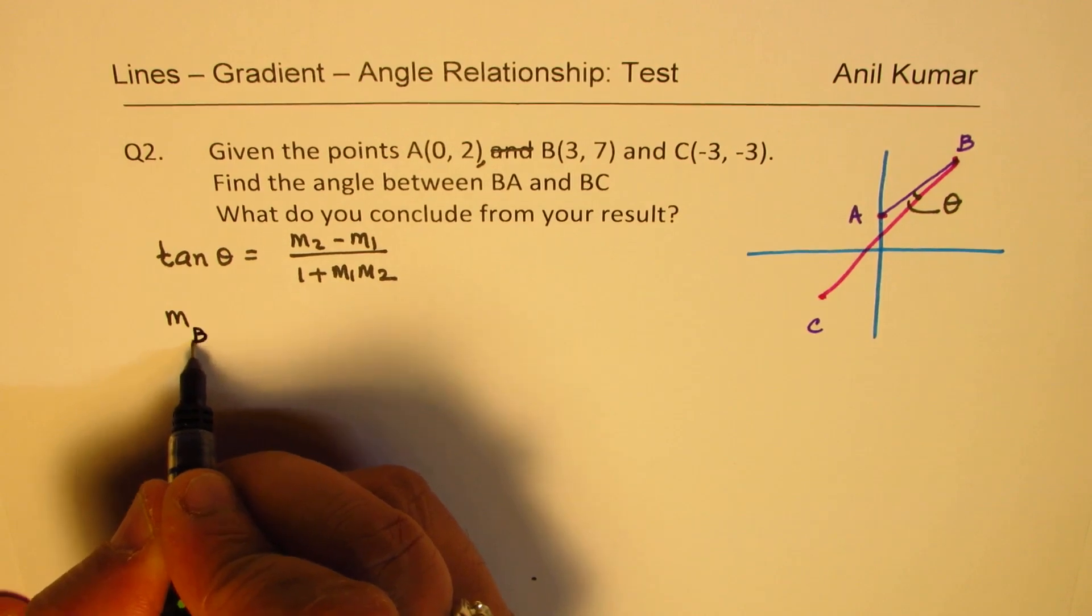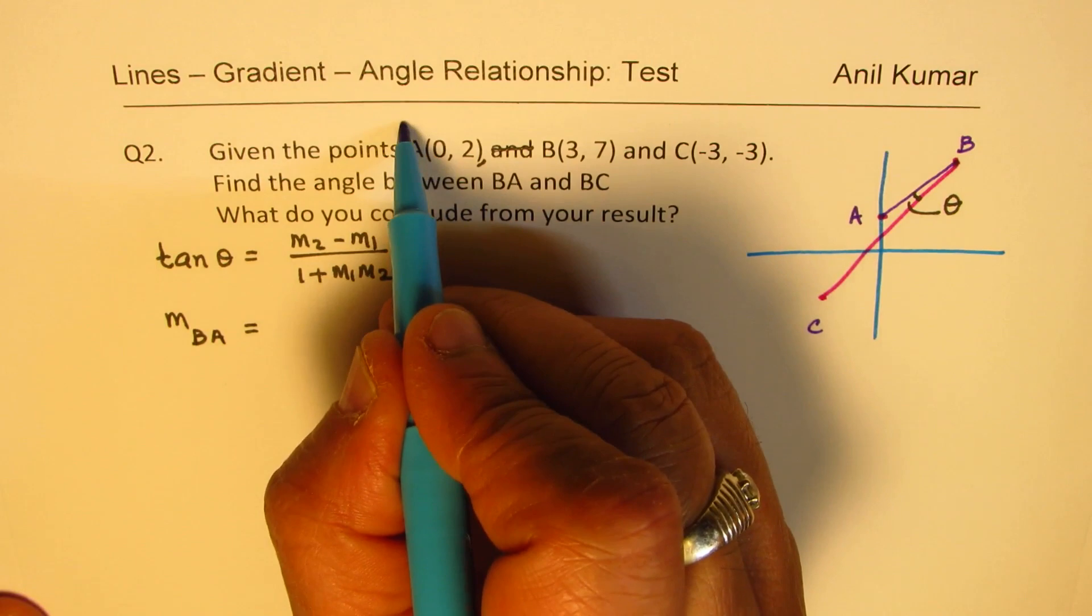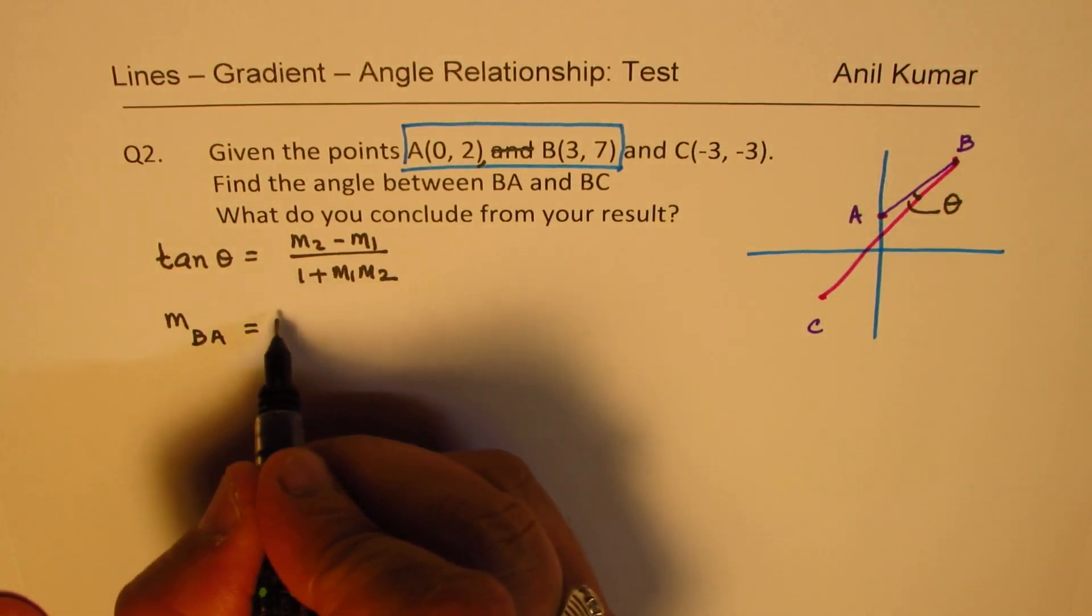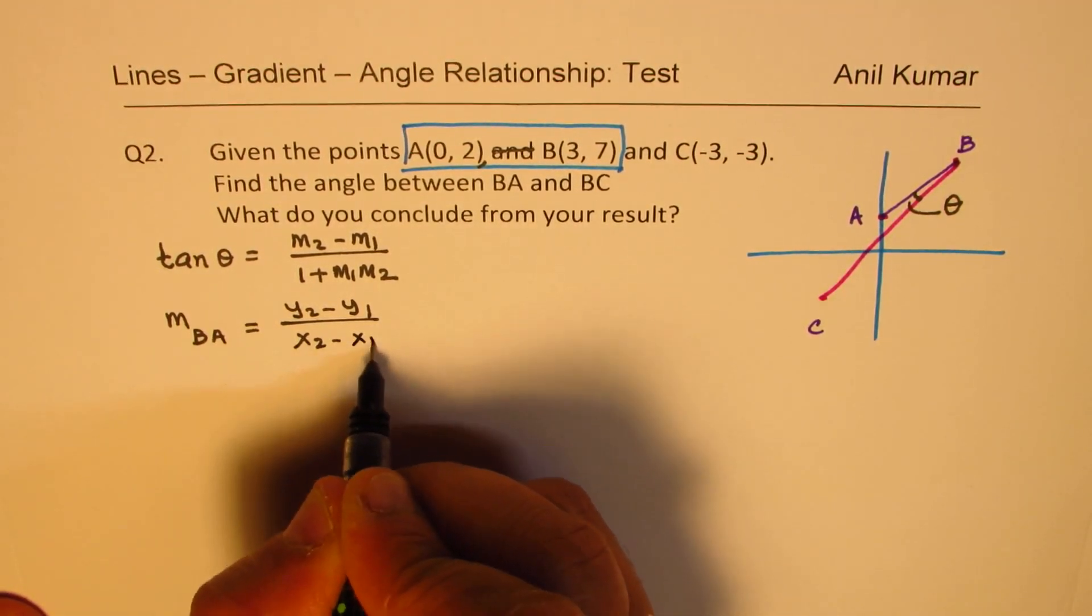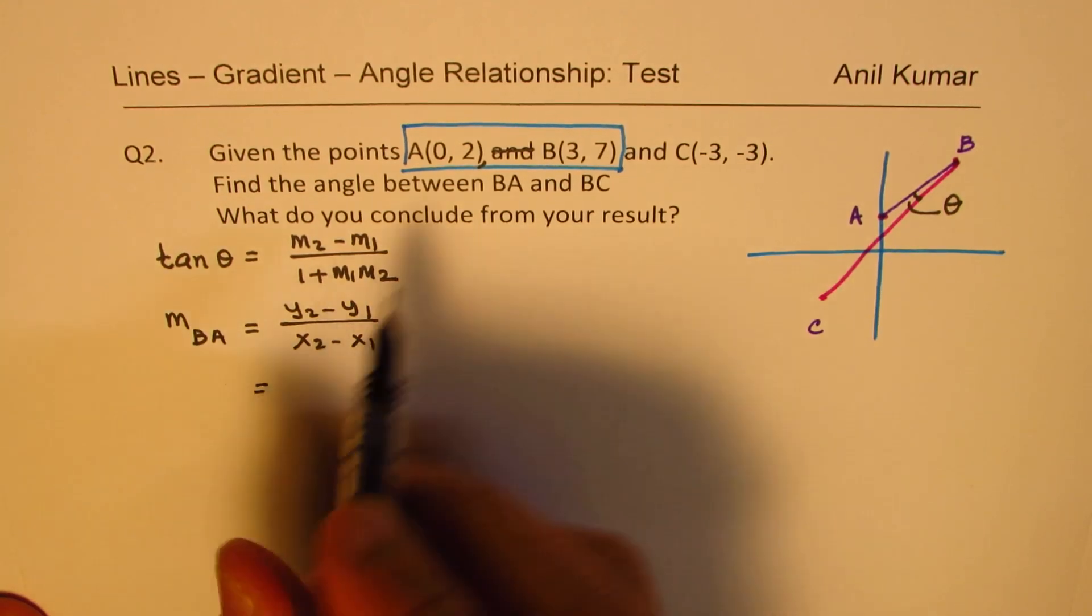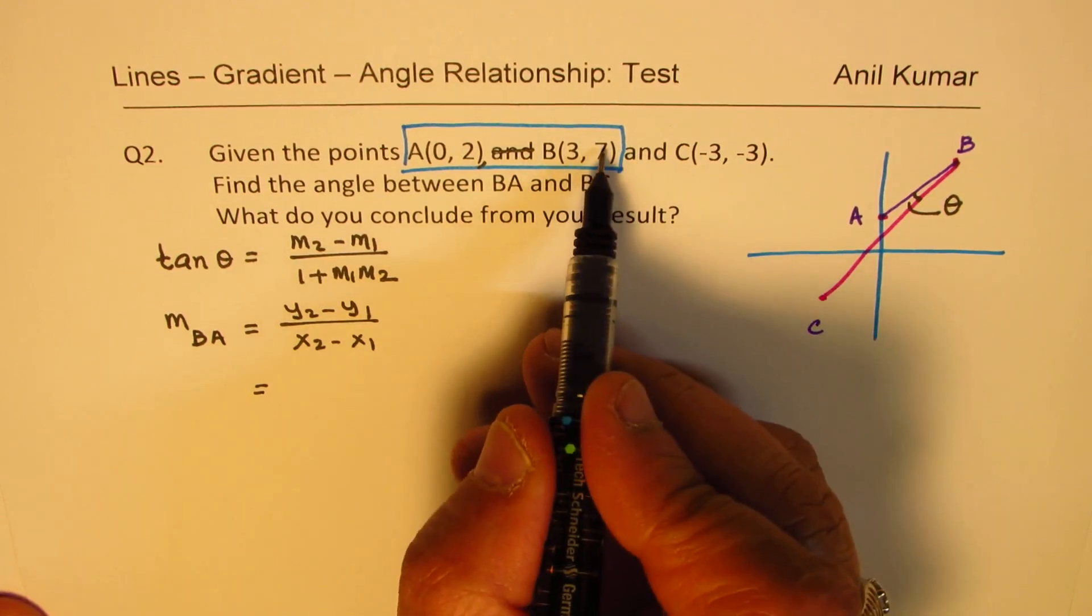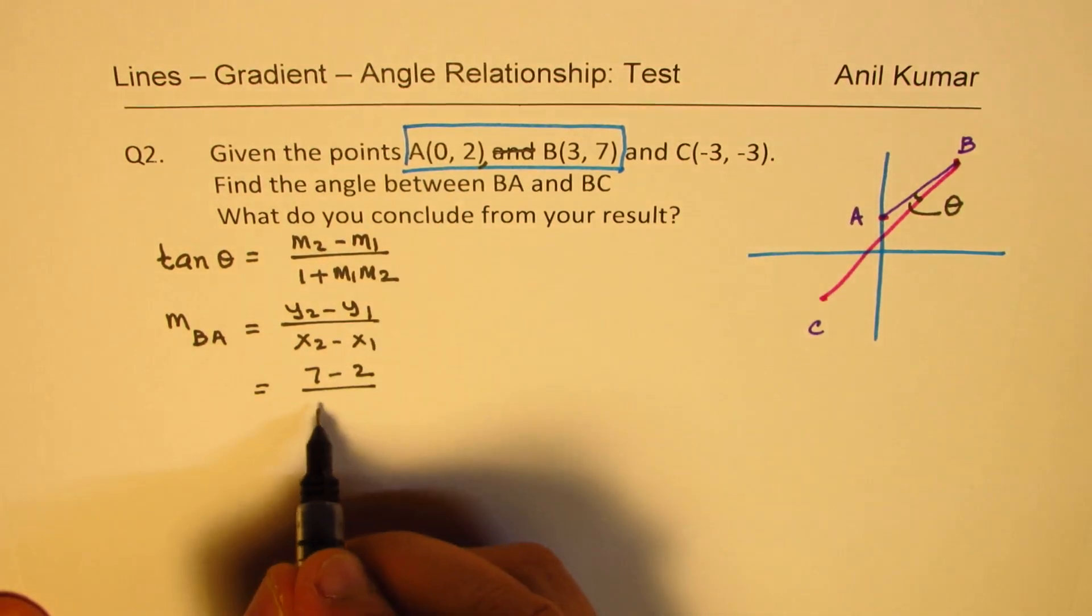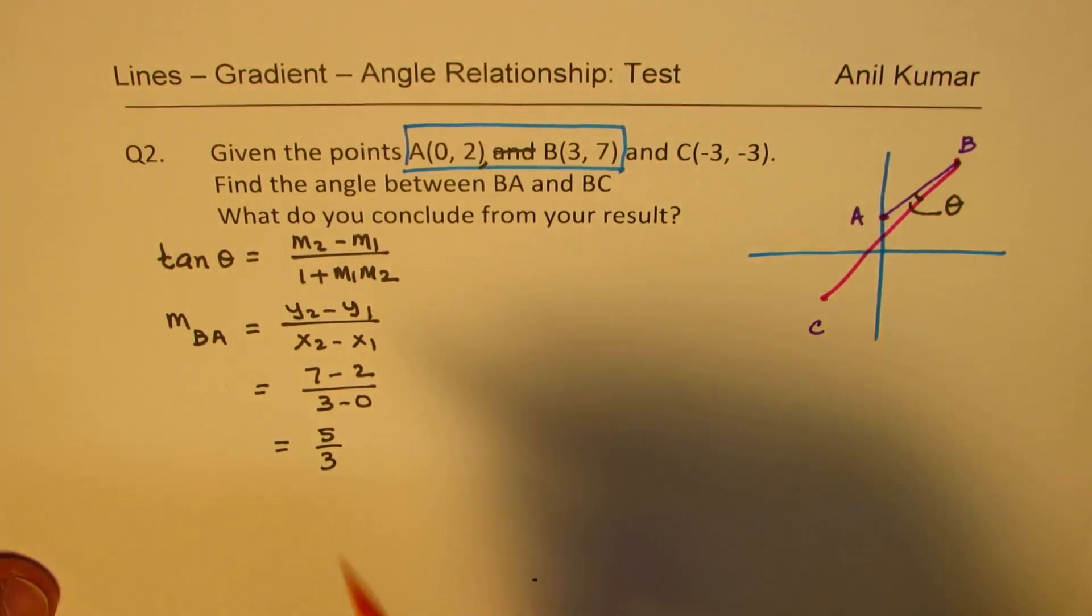So we get slope of BA. To consider the slope of BA, we are actually considering these two points. And slope is Y2 minus Y1 over X2 minus X1. So for BA, we get the slope as, the order can be changed, we can write 7 minus 2, Y values difference, 3 minus 0. And that gives you 7 minus 2 is 5, 5 over 3. So we got one slope.